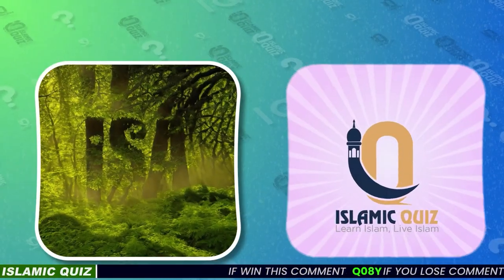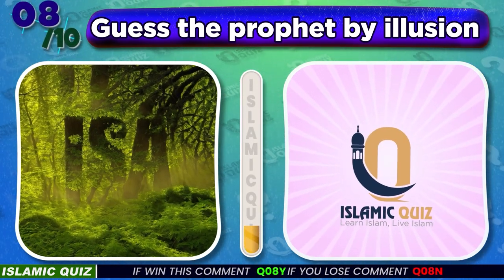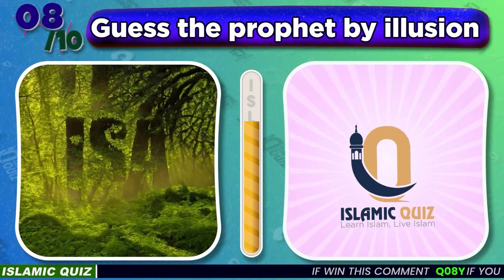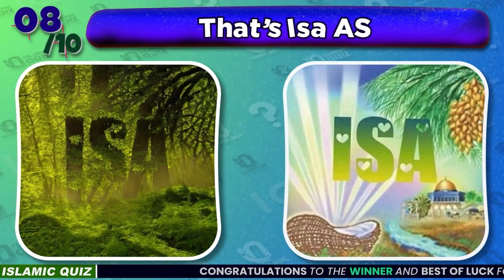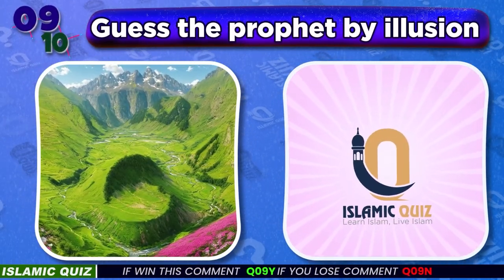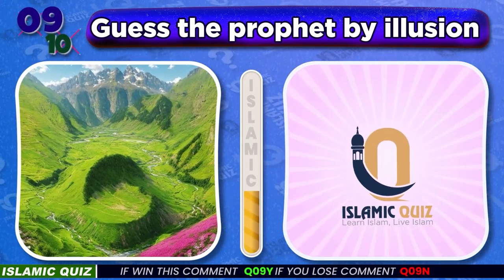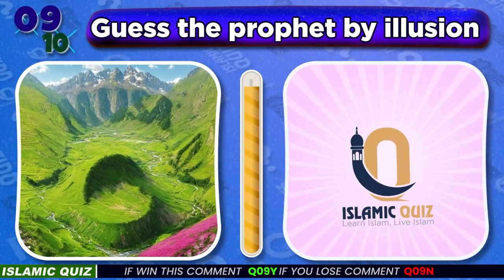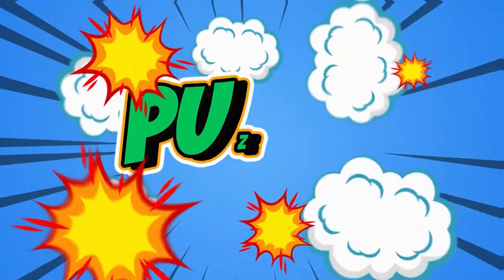Quiz No. 8: Can you guess whose prophet is in the illusion? Quiz No. 9: Which prophet do you think these illusions represent? That's Musa alayhi salam.